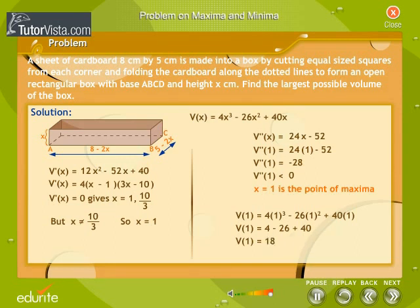We get V1 is equal to 18. If we remove a square of side 1 cm from each corner of the sheet and make a box, the largest possible volume of the box is 18 cubic centimeters.